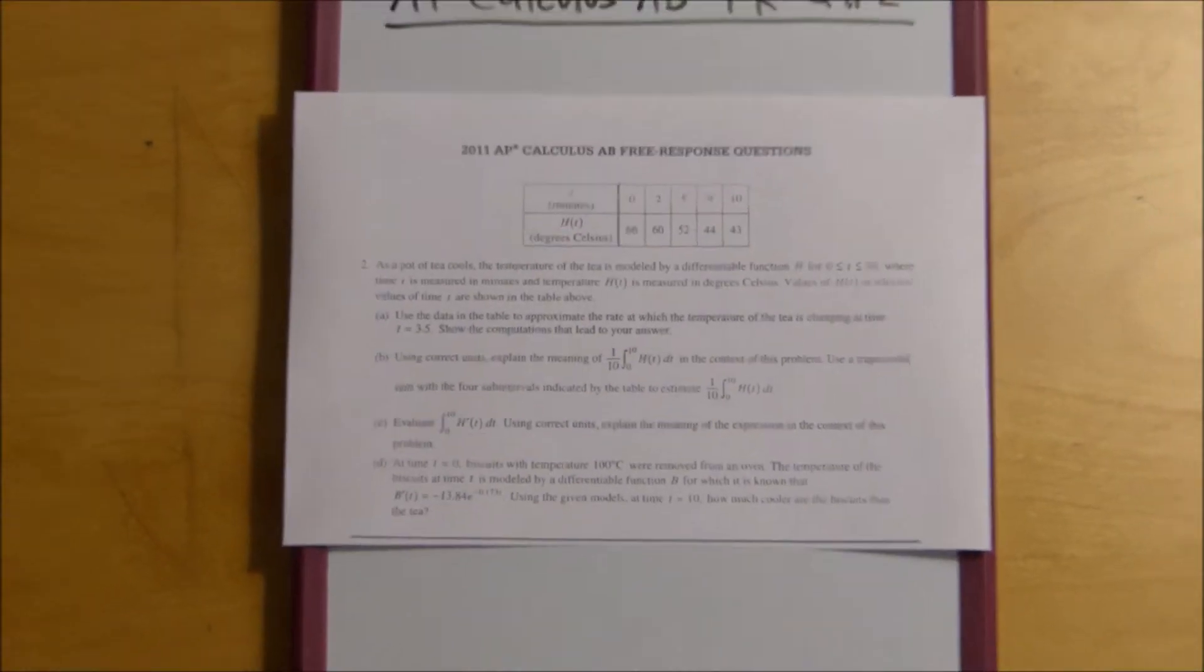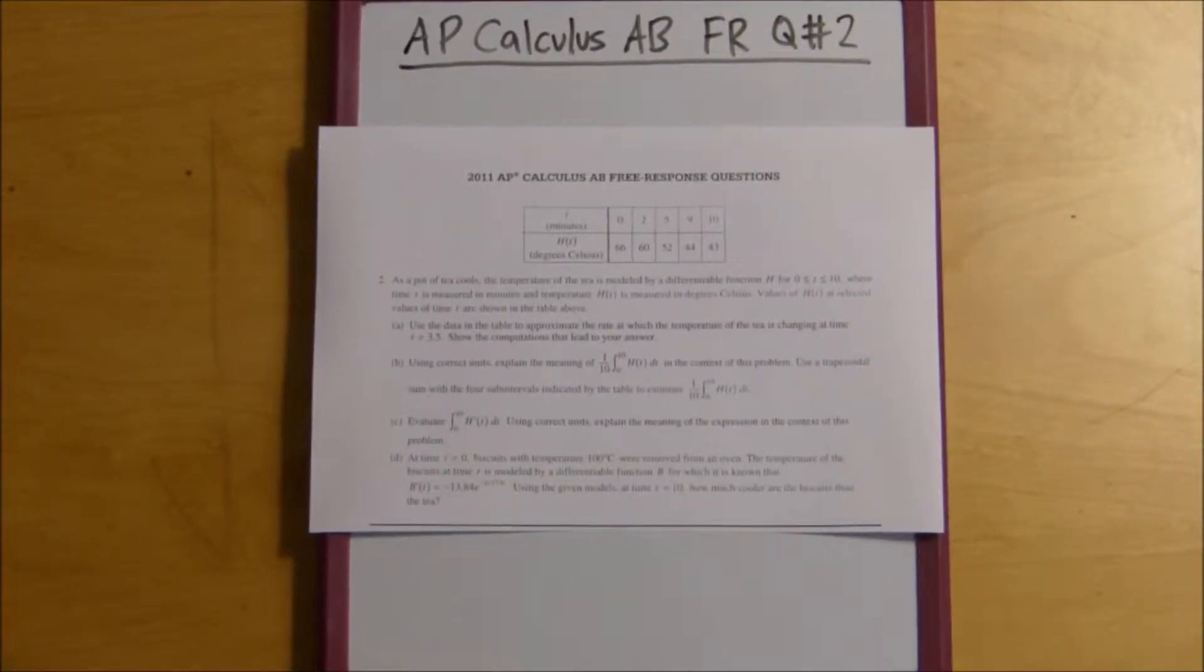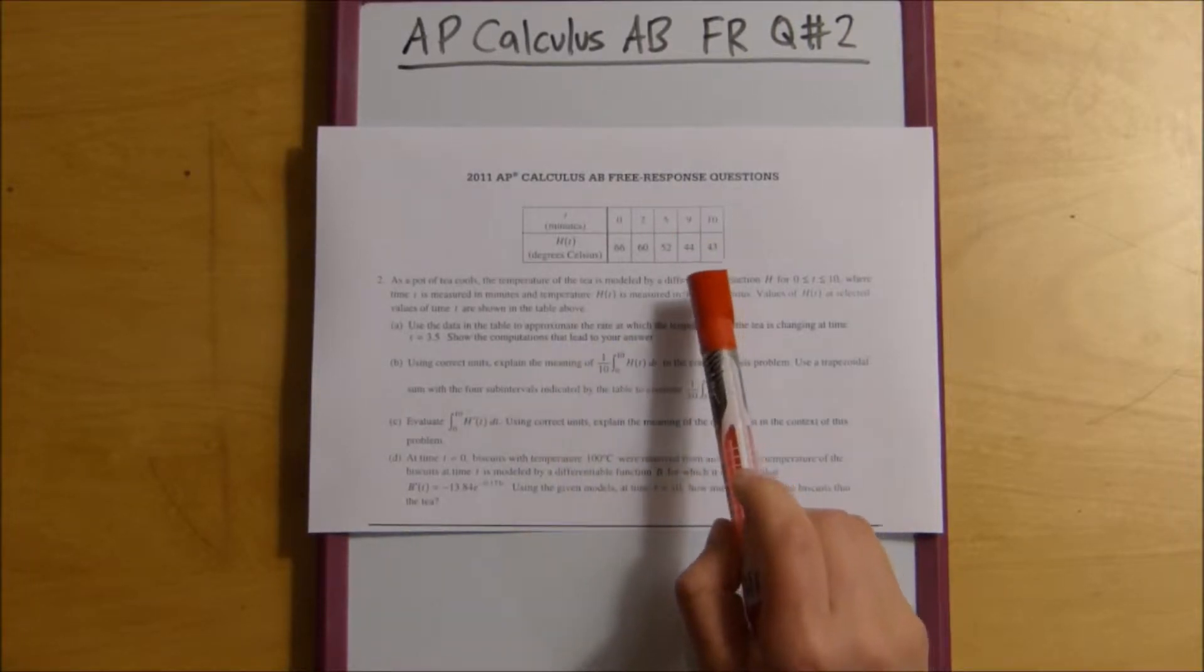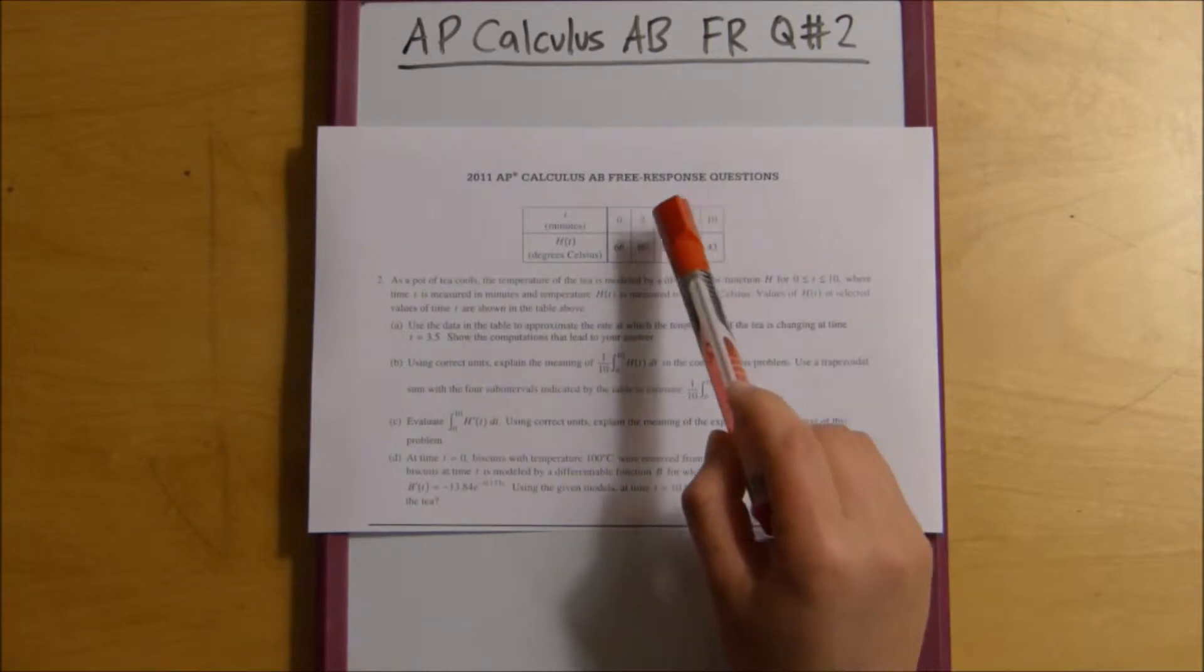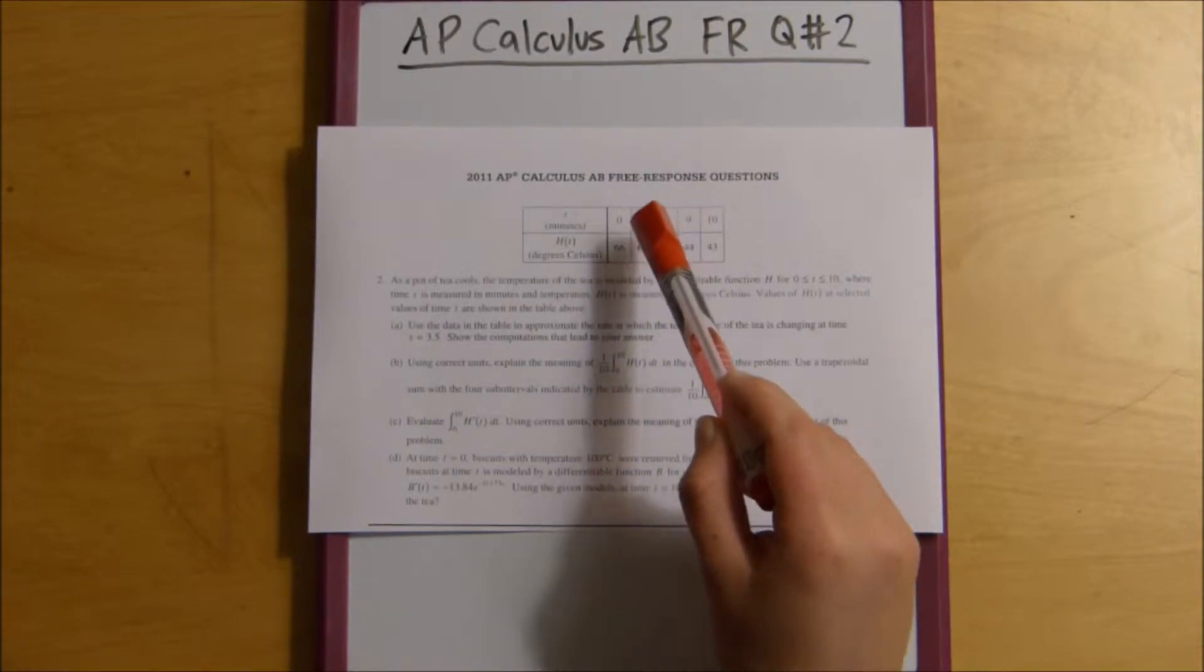So, zoom out. Okay, so in this problem we have this pot of tea and the pot of tea is cooling. Here we have this data table that tells you the temperature of the pot as the time moves on. Our first question is to approximate the rate at which the temperature of the tea is changing at time T equals 3.5. So what we do is we look where 3.5 would be if we were to have a point in this data table and it would be right between T equals 5 and T equals 2.